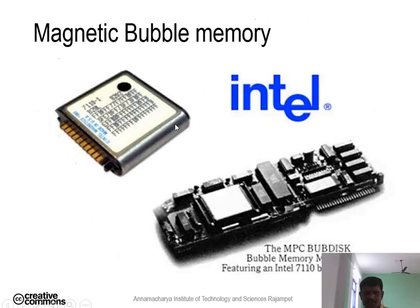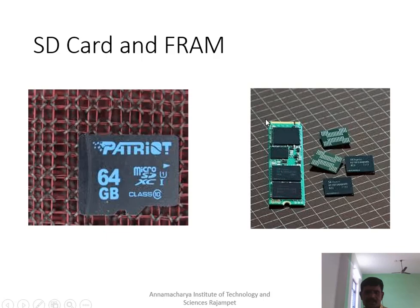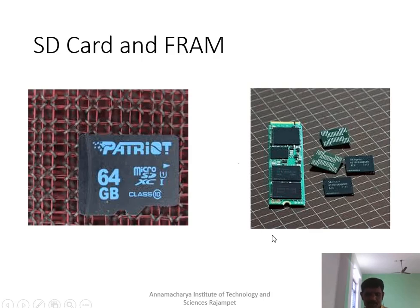Magnetic bubbles are used in microprocessor chips and other chip types. These chips use magnetic bubbles along with SD cards and FRAMs, similar to SIM cards or memory cards. In these chips, magnetic bubble memories are used. This concludes the discussion on magnetic bubble memory and its applications.